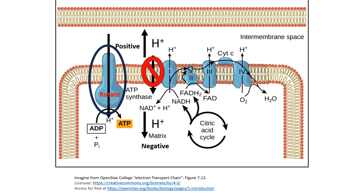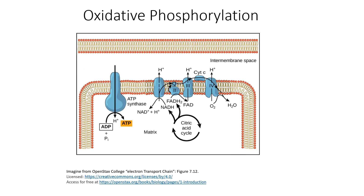Through that rotation, ATP synthase phosphorylates ADP back to ATP. This process of creating ATP in the mitochondria using the electron transport chain is known as oxidative phosphorylation. A series of oxidation reactions allows for a hydrogen ion gradient to be established, which then allows for the phosphorylation of ADP back to ATP.